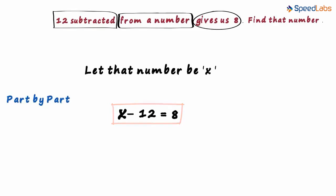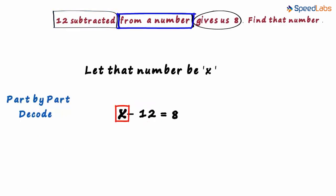Remember, the job of the person who makes these equations is to just twist the words. It was such a simple equation written in such a complicated way. You just have to learn to decode the parts and write them down. So to quickly review, this is derived from 12 subtracted, this is derived from from a number, and this is derived from gives us 8. So breaking the questions into parts and writing the equation is the best way to form an equation.